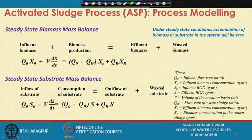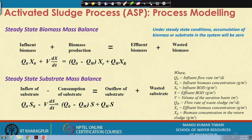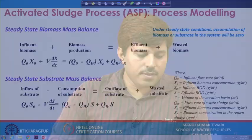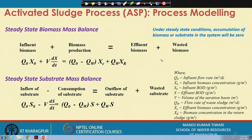We discussed the various assumptions taken for designing or modeling of the activated sludge process. There are two things in the activated sludge process: biomass and substrate. Biomass is produced in the system and substrate is decomposed or degraded. Both undergo changes, and if we can track the mass balance of both constituents, we can design or model the activated sludge process.